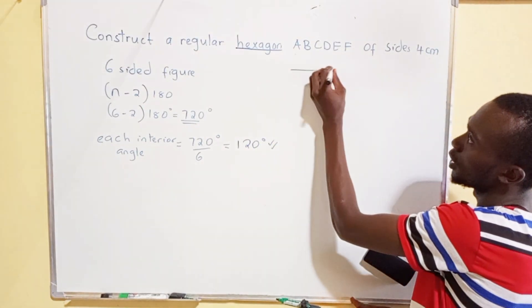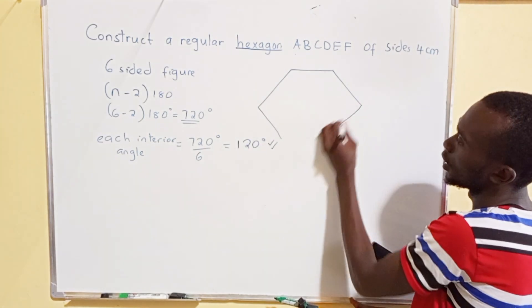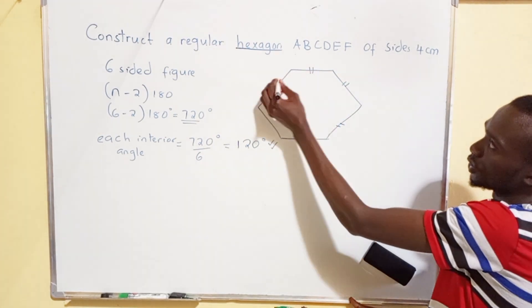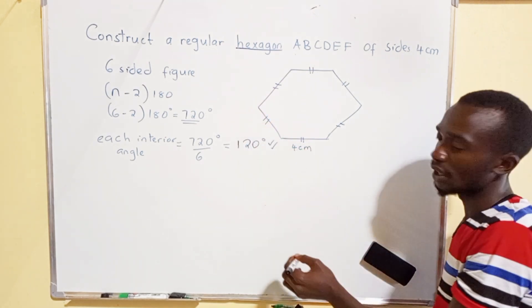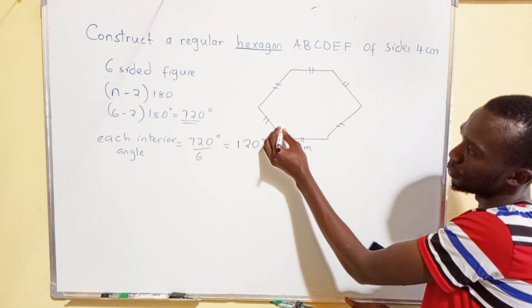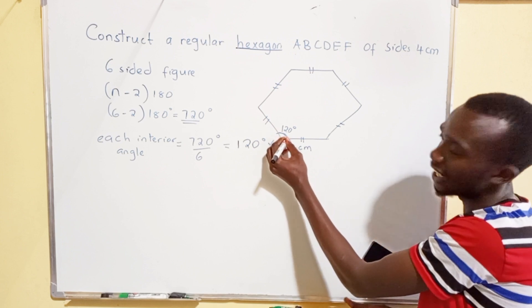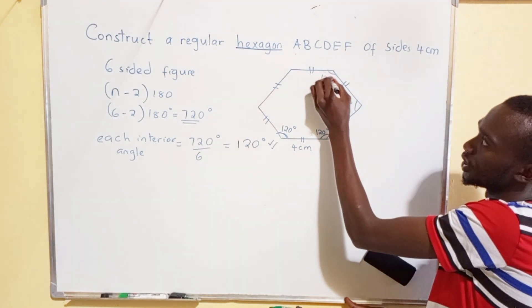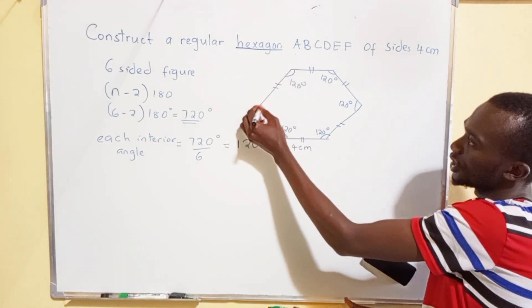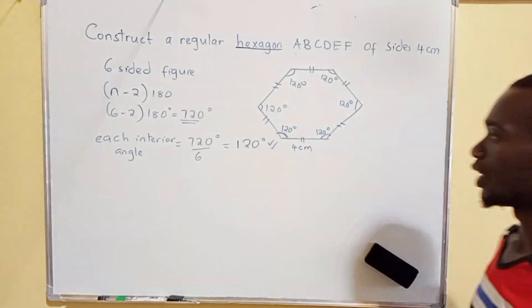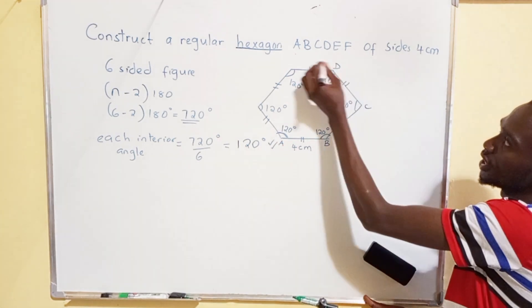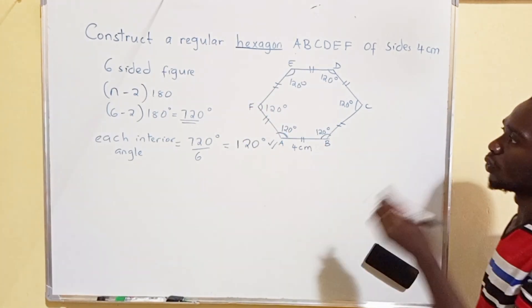You have a sketch of the diagram. I'm going to have a diagram whereby all sides — this side, this side, this side, this one, this one, and this one — are equal and should be 4 centimeters each. The interior angle at each vertex should be 120 degrees. We label the vertices A, B, C, D, E, F, and that is the sketch of our regular hexagon.